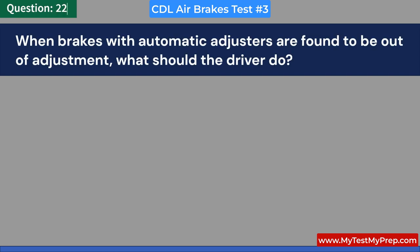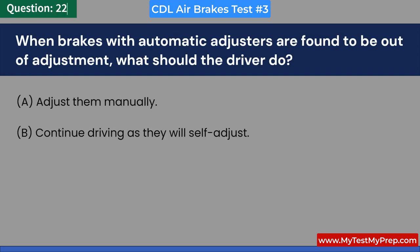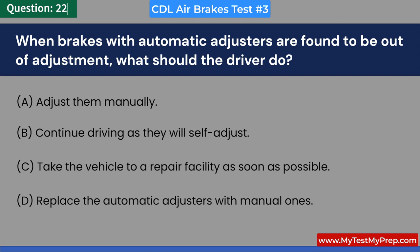When brakes with automatic adjusters are found to be out of adjustment, what should the driver do? A. Adjust them manually. B. Continue driving as they will self-adjust. C. Take the vehicle to a repair facility as soon as possible. D. Replace the automatic adjusters with manual ones. Answer: C. Take the vehicle to a repair facility as soon as possible.